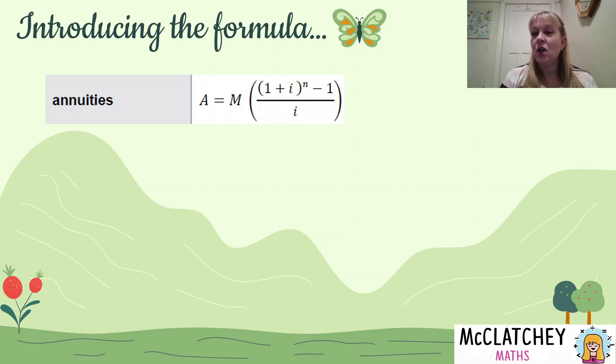A equals M and then there's a whole lot of stuff going on in brackets. So let's talk about what those different variables are, especially M. We haven't seen M before. So firstly, A is the future value of our annuity, typically known as the amount at the end.